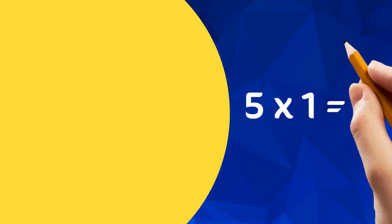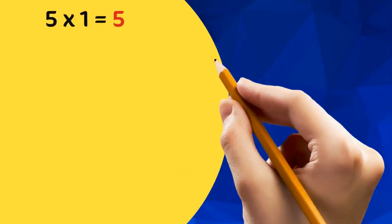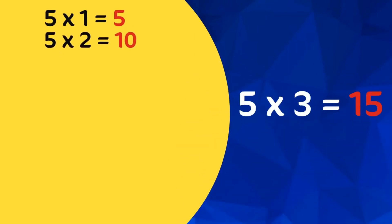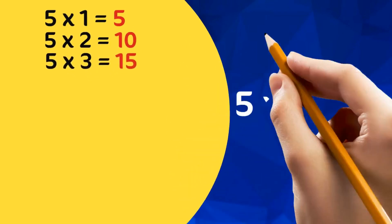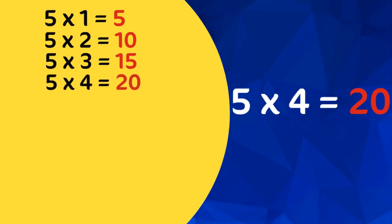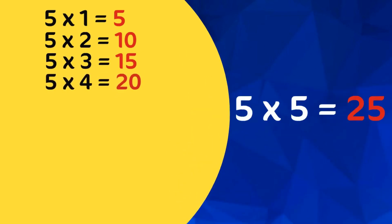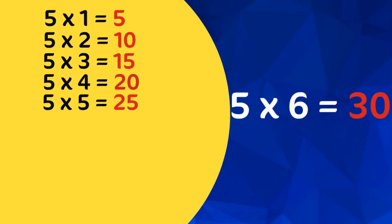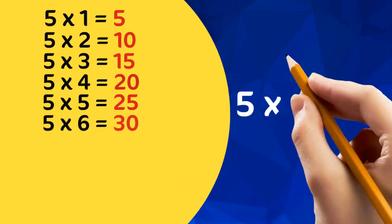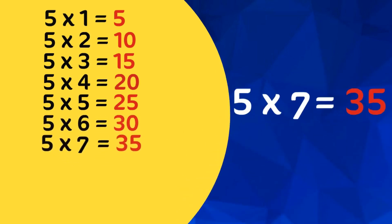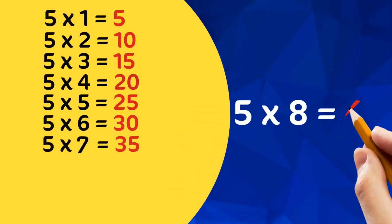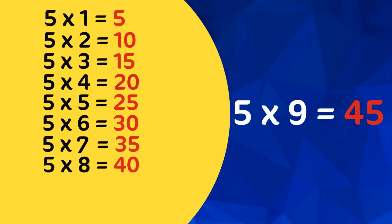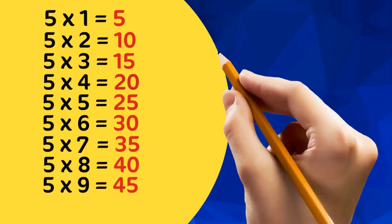5 1s are 5, 5 2s are 10, 5 3s are 15, 5 4s are 20, 5 5s are 25, 5 6s are 30, 5 7s are 35, 5 8s are 40, 5 9s are 45, 5 10s are 50.